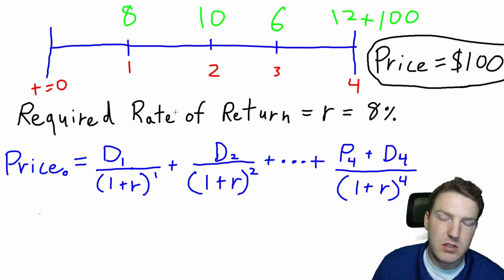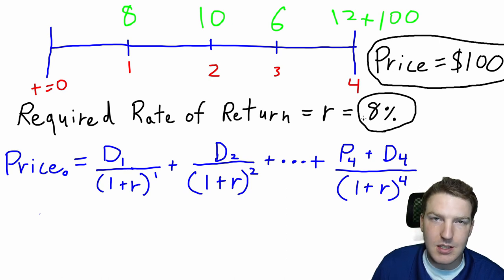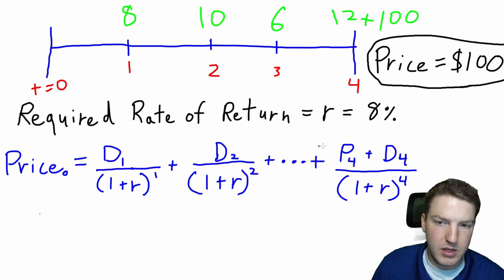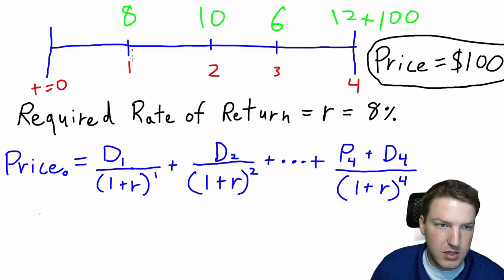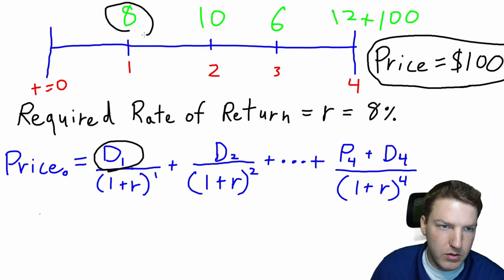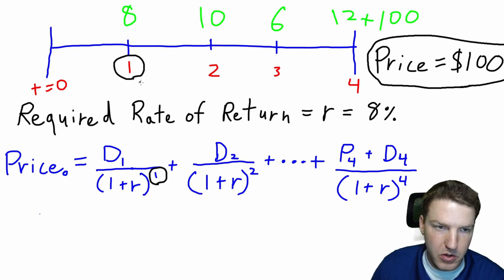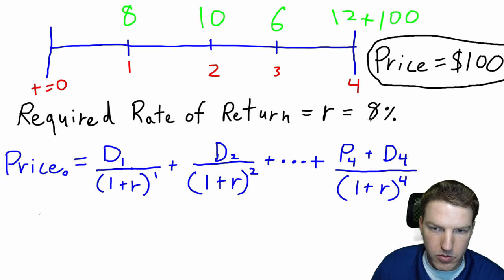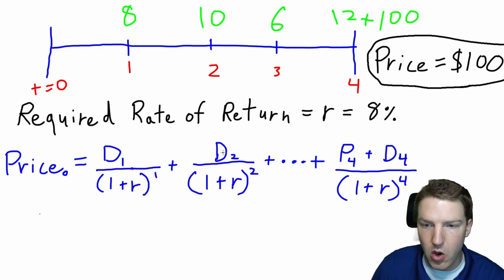The required rate of return is based on the risk of the stock. In most dividend discount model problems this value is given to you. We're going to assume that based on the risk of the stock we need a return of at least eight percent. We'll use the dividend discount model formula: d1, the dividend at time one, divided by one plus the required rate of return of eight percent to the exponent of one. Then d2, ten dollars, divided by one plus eight percent to the power of two, and so on through each time period.